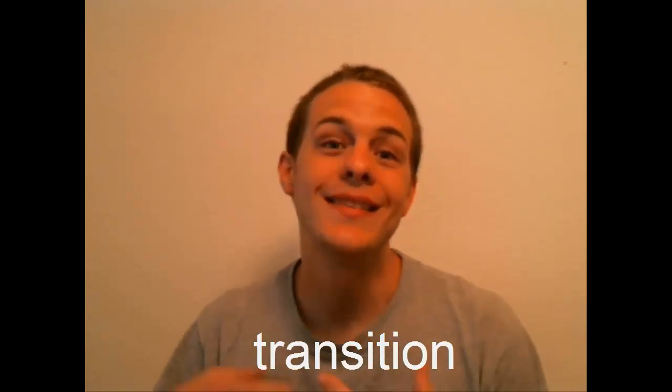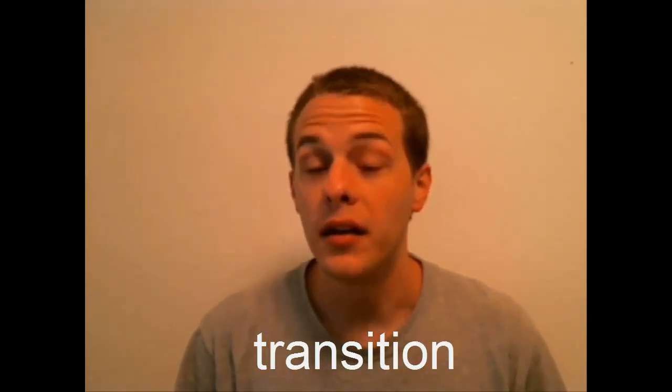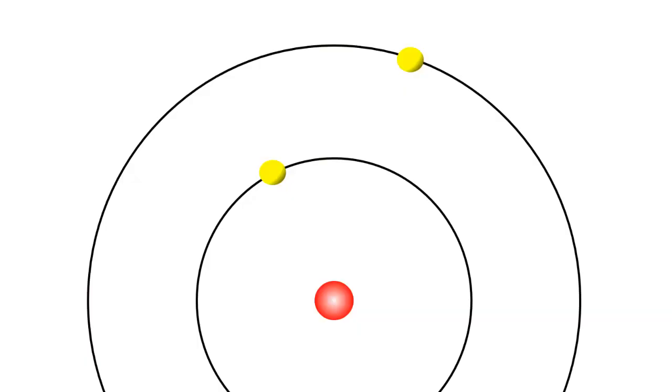Furthermore, his model suggested that an electron orbiting a nucleus does not absorb or emit energy. It's only when an electron makes a transition or a jump between orbits that an electron absorbs or emits energy. Electrons absorb energy by jumping from an orbit of lower energy to an orbit of higher energy,